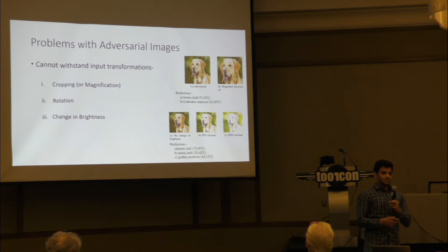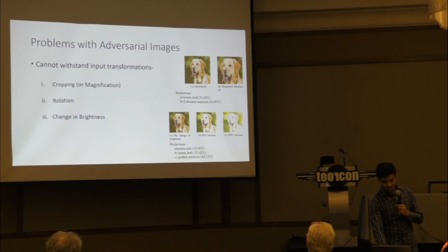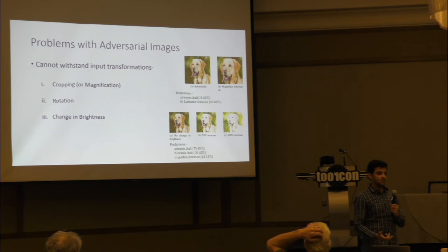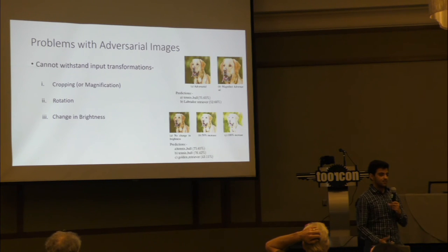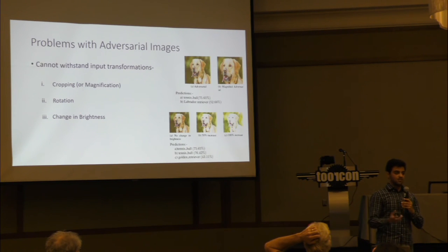Adversarial images are malicious and harmful, but they're not perfect. Simple operations on adversarial images can defeat them. If you crop the image — look at this dog, the adversarial image gets misclassified as a tennis ball with 75.65% confidence — but if you crop or magnify it, it returns back to its original class, Labrador retriever. There is a very specific pattern in the image that is only maintained if you do not apply these input transformations.